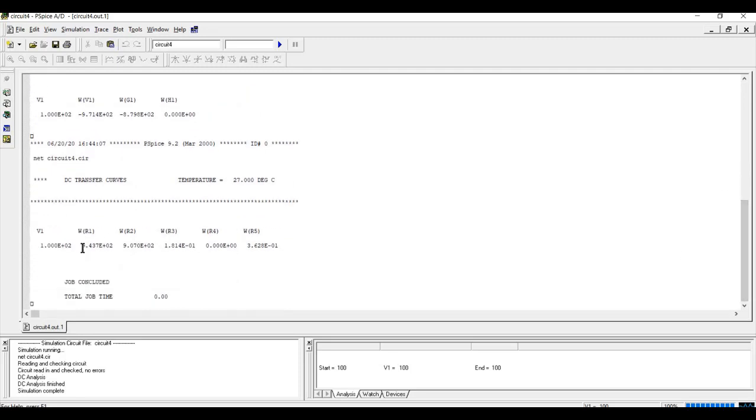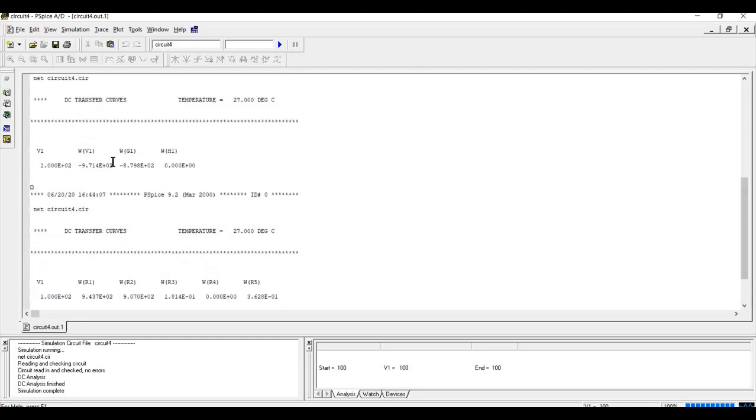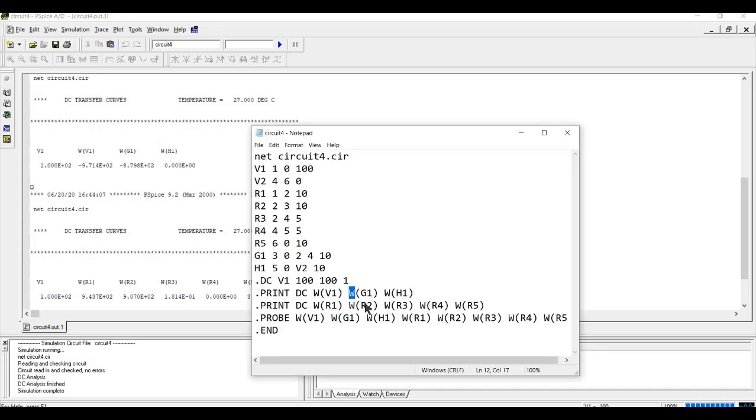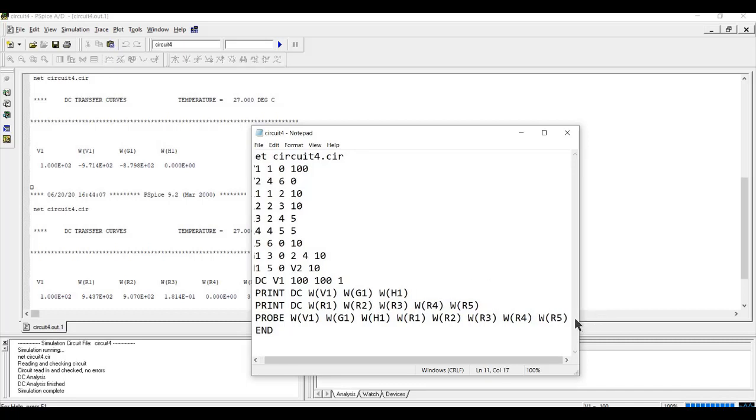So you can see that V1 and we use WR1 and WR2. The power to resistors WR1, WR2, WR3, WR4, WR5. And also WV1, WG1, WH1. So this is nothing but our PSPICE commands. So W is used to find the power in the circuit.